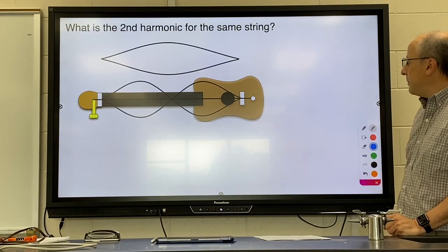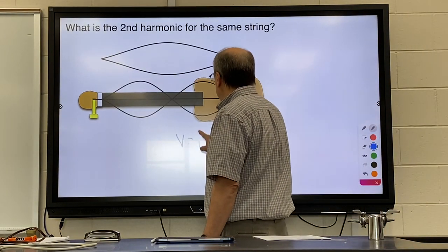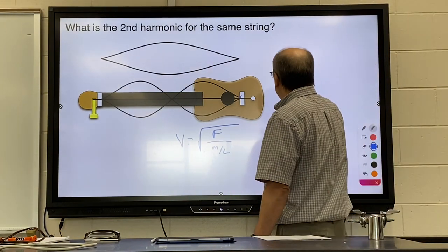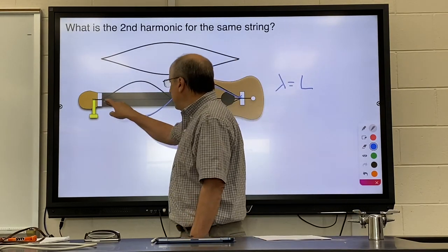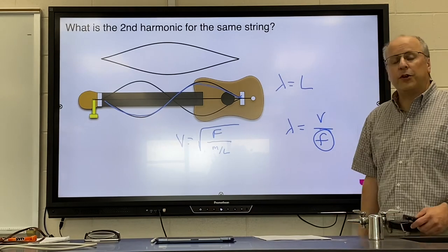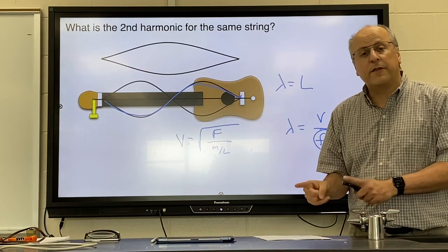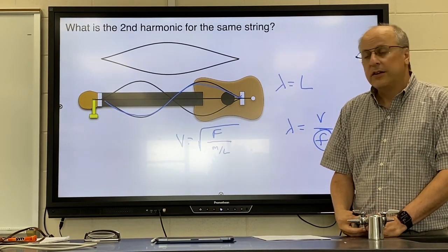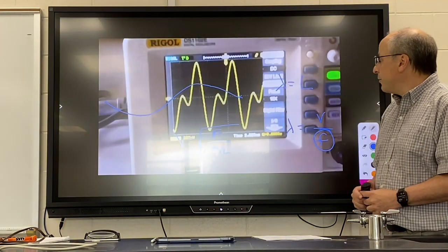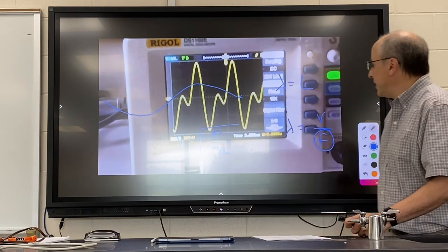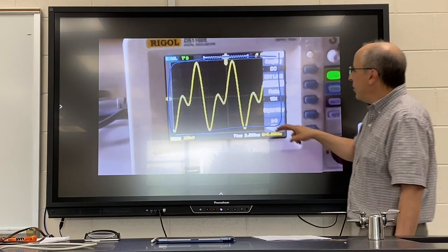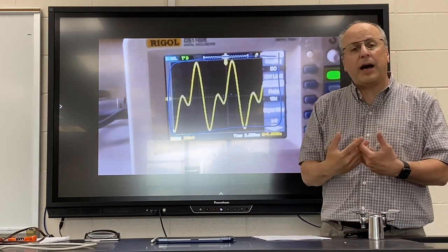If we ask for the second harmonic of the same string, you still do the same steps. Your velocity should be the same as before. The only difference is that now an entire wave fits in the length of the string. Then use velocity over frequency and solve for your new frequency. This time we should get a frequency one octave above the last one we calculated. Depending on which mode of oscillation you excite determines which frequency you'll get. In real guitars, you may sometimes get both modes of oscillation at the same time, which is why on an oscilloscope you might see the pattern for sounds of two octaves overlapping.